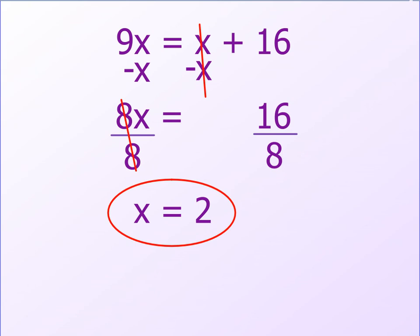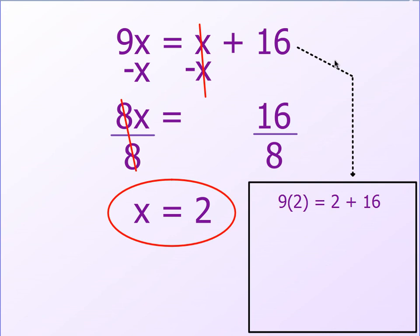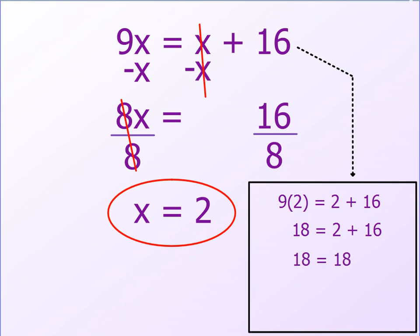I have my solution, but I need to go back and verify it's correct. We check our solution using substitution. Since x = 2, I go back to my original equation and replace every x with 2: 9 times 2 equals 2 plus 16, which becomes 18 = 18. Since both sides match, I know my answer is correct and I'm ready to move on.